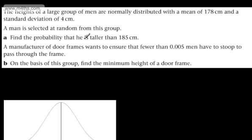In part A, we need to find the probability that he is taller than 185 centimeters. So let's consider what we've got here. We can say H follows a normal distribution, mean 178 and a variance of 4 squared. So that's our first port of call.